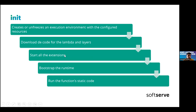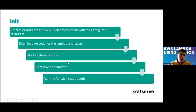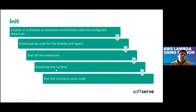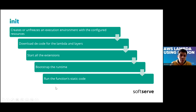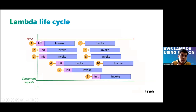The next step is that extensions are started. Extensions are like plugins — there are plugins made by AWS and by other users. Then we need to initialize the runtime, which is basically the programming language you are going to use. Finally, AWS Lambda will run your code. All these steps are run in the first init stage.